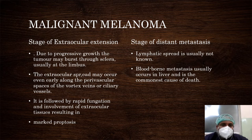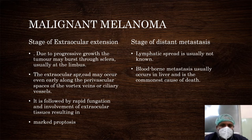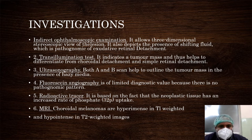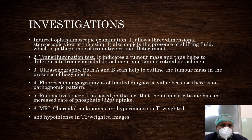The stage of extrascleral extension and distant metastasis: due to progressive growth, the tumor may burst through the sclera at the limbus. Extrascleral spread may occur at the exit points of vortex veins or scleral vessels, causing rapid fungating growth into extrascleral tissues and marked proptosis. Distant metastasis occurs most commonly to the liver and is a common cause of death. Investigations include indirect ophthalmoscopy, which allows three-dimensional stereoscopic view of the lesion and depicts shifting fluid pathognomonic of exudative retinal detachment. Transillumination test helps differentiate from choroidal detachment. UBM and B-scan help outline the tumor mass in hazy media. FFA, radioactive phosphorus uptake test, and MRI can also be used.